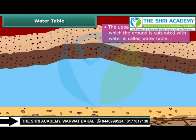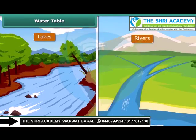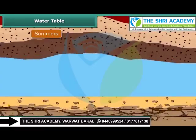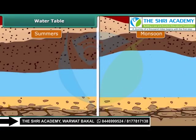The upper limit of the level below which the ground is saturated with water is called water table. Ground water is the water found below the water table. Runoffs from lakes and rivers, melting snow and rain lead to the formation of water table. Seasonal fluctuations in water table are common. During summers, the water table goes down, but during monsoon, its level rises.